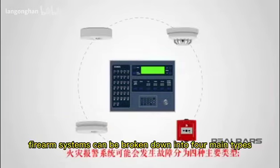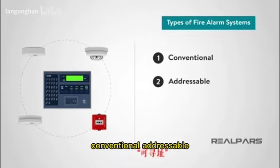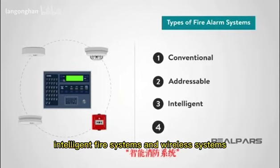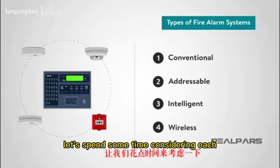Fire alarm systems can be broken down into four main types: conventional, addressable, intelligent fire systems, and wireless systems. Let's spend some time considering each.